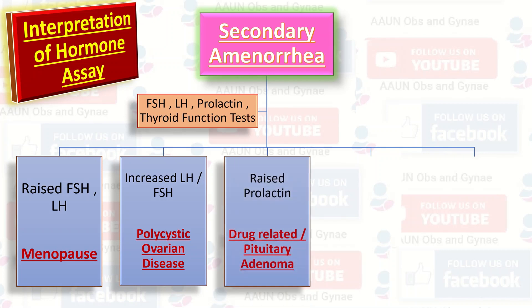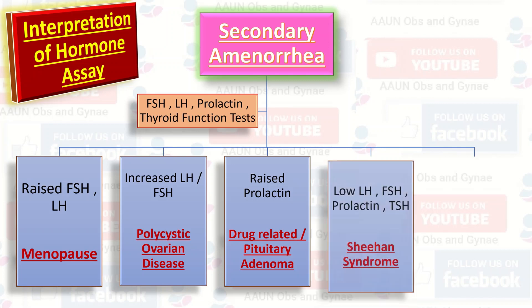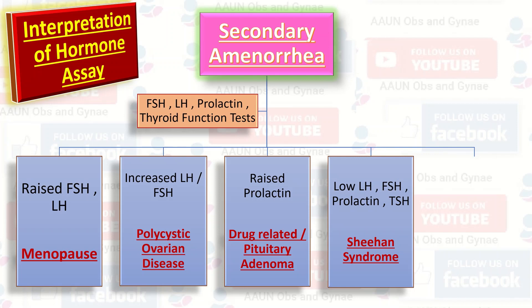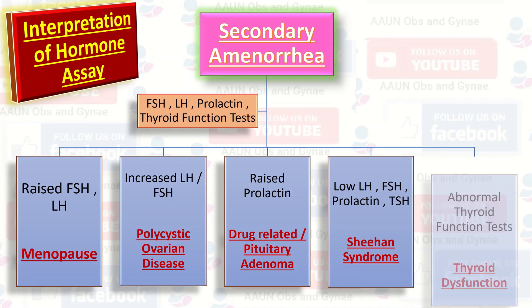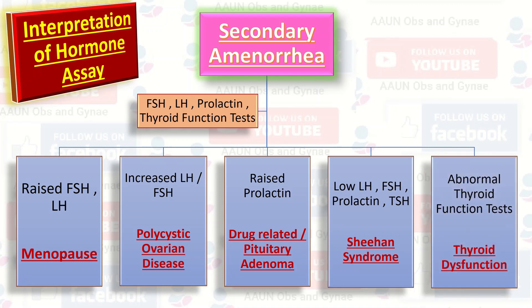Thirdly, raised prolactin level is either drug-related or points to pituitary adenoma. Fourth, low FSH, LH, prolactin, and thyroid function tests are indicative of Sheehan's syndrome. And number five, abnormal thyroid functions are seen in thyroid dysfunction.